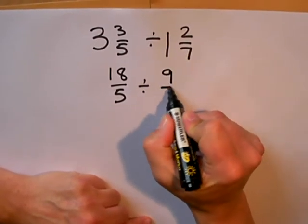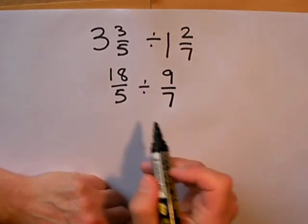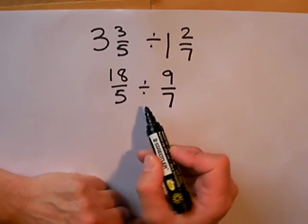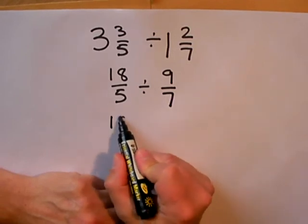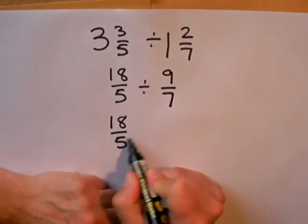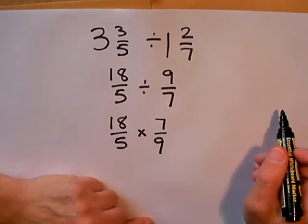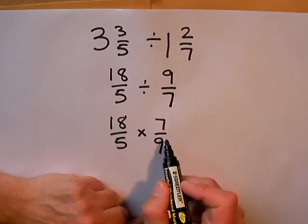Now because it's a division and I'm going to find it more difficult to do, I've decided to turn it into a multiplication question. And the way I can do that is by turning the second fraction upside down. This is an easier question to work out.